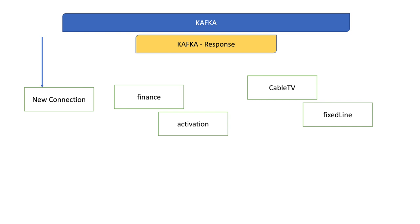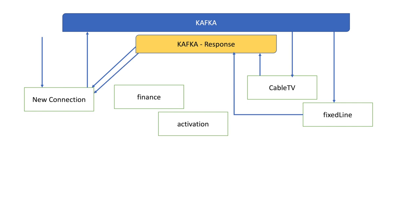The finance service will be a Java Spring Boot application and the others are TypeScript-based Node.js applications. When a request comes to the new connection service it publishes a message to Kafka, and immediately that message is received by cable TV and fixed line services. Keep in mind everyone receives this message, but based on the message type, services either act or ignore it.